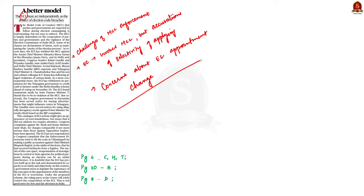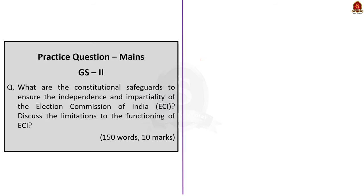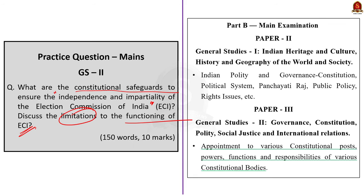Since this article talks about the independence of ECI, let us try to solve a main question regarding the same. The question is: What are the constitutional safeguards to ensure the independence and impartiality of the Election Commission of India? Moreover, discuss the limitations to the functioning of ECI. This question will be asked in GS Paper 2 under the topic of appointments to various constitutional posts, powers, functions, and responsibilities of various constitutional bodies.